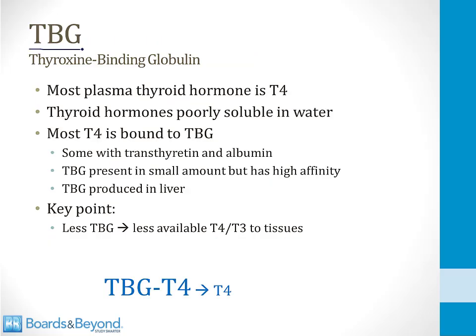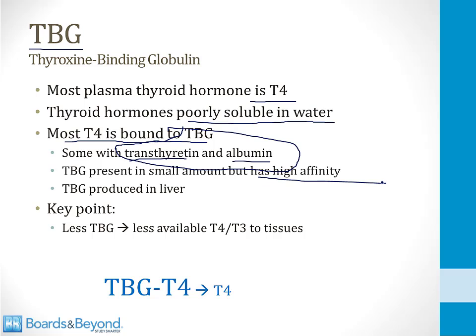Thyroxine-binding globulin, or TBG, is an important carrier molecule for thyroid hormone. T4 and T3 are poorly soluble in water and need TBG to carry them through the serum. Most T4 in plasma is bound to TBG; smaller amounts are bound to albumin, and some to transthyretin. TBG is present in the smallest amount of these three, but has the highest affinity for thyroid hormone, so most T4 is bound to TBG. TBG is produced in the liver.